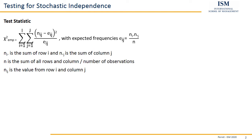Basically we compare our situation with the situation where there's no relation whatsoever. For each entry we take the difference between our observed value and the corresponding expected frequency: N_IJ minus E_IJ. We square this and divide by the corresponding expected frequency E_IJ. So for each entry: actual value minus expected value, squared, divided by expected value. We sum up all these values for all entries in our contingency table. This gives us our chi-squared statistic, which is our test statistic.